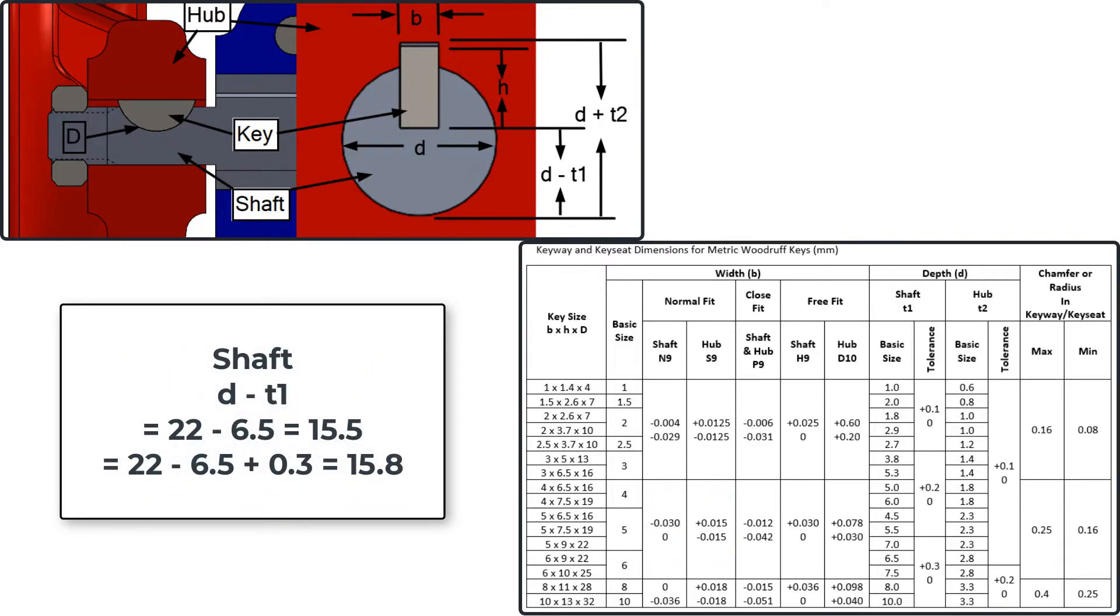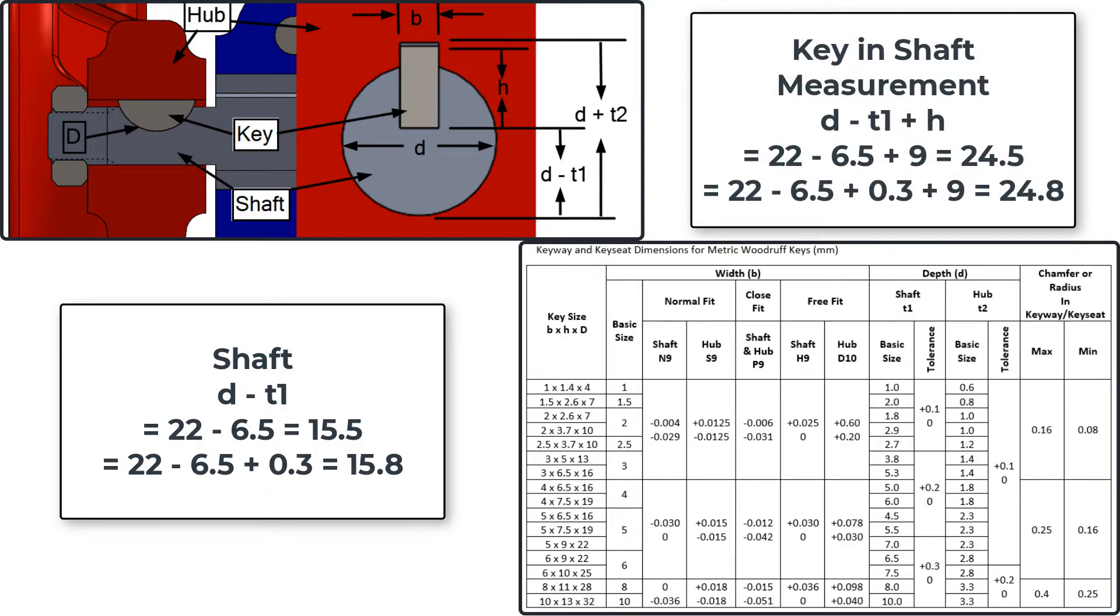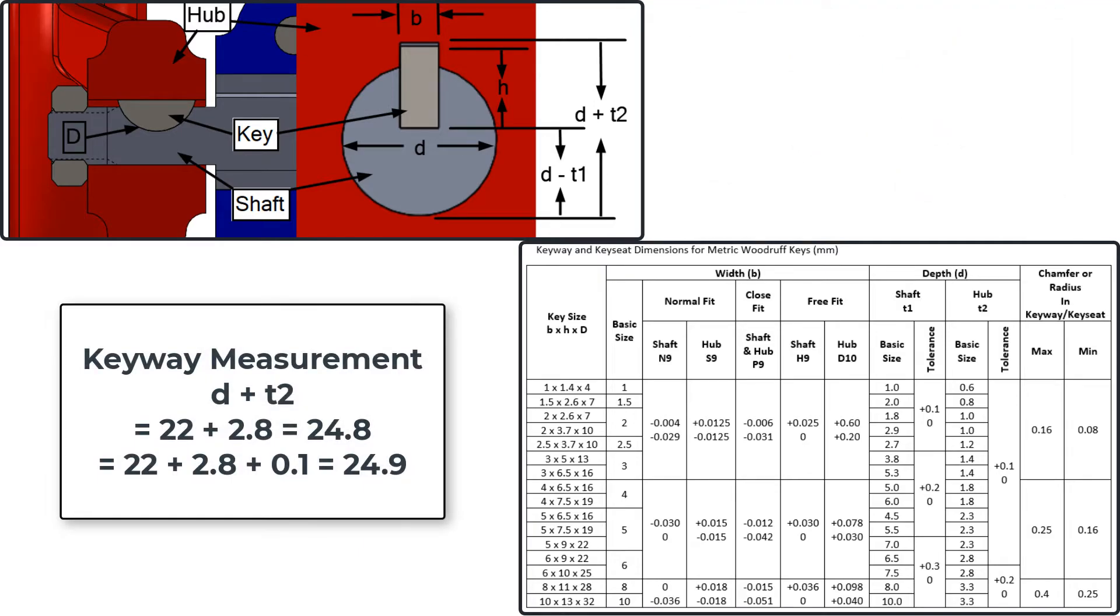The depth of the key seat in the shaft would be 15.5 to 15.8 millimeters. The measurement with the key in the slot would be 24.5 to 24.8 if the key was at its nominal size of 9 millimeters. The measurement of the keyway D plus T2 would be 24.8 to 24.9.